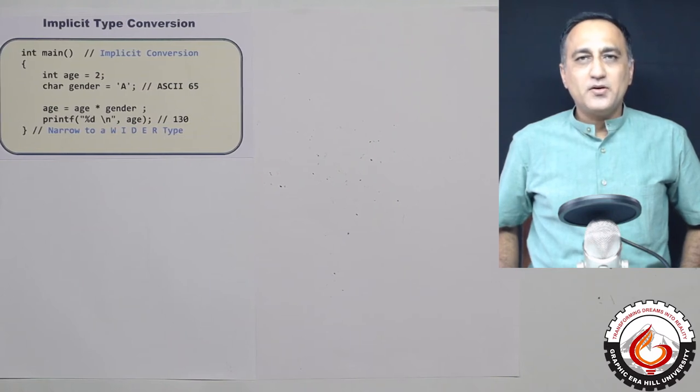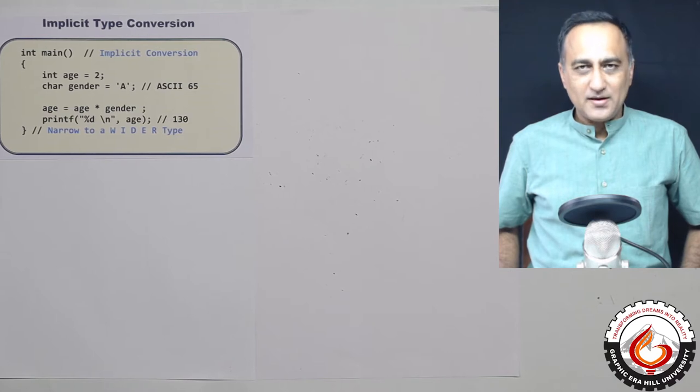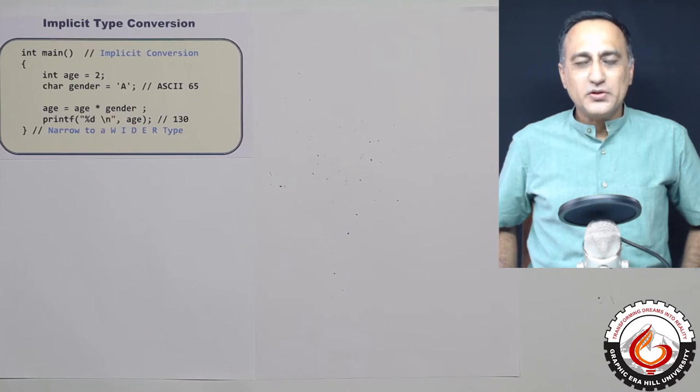Say for example, you got an integer variable i whose value is 10 and you got a floating point number j which is say 20.23.